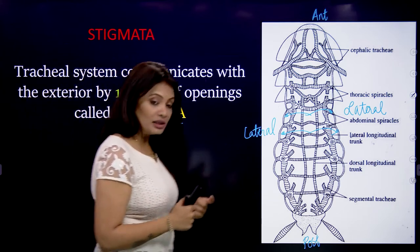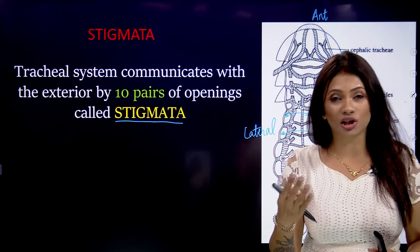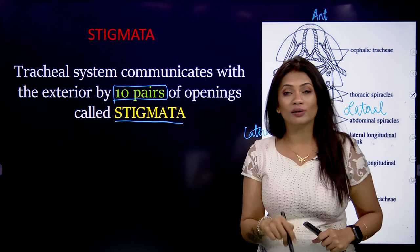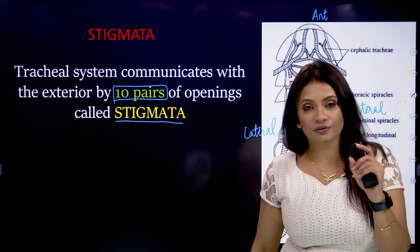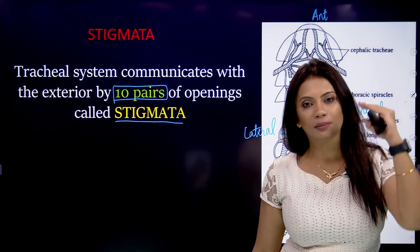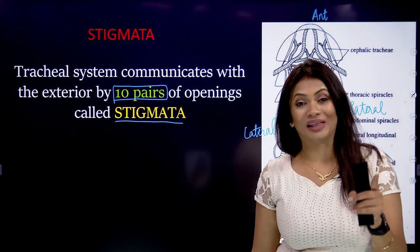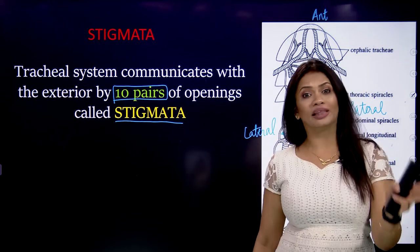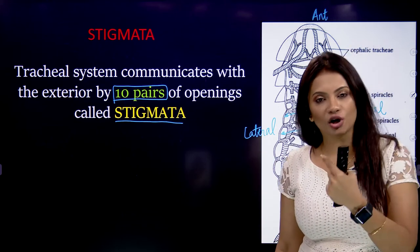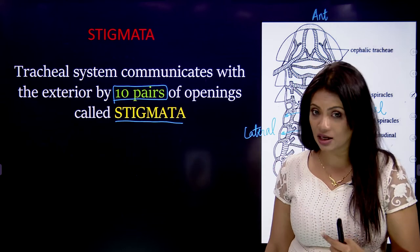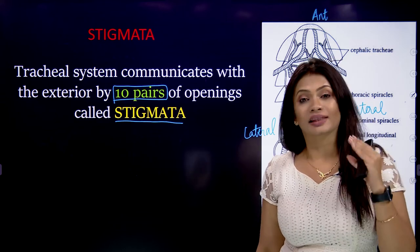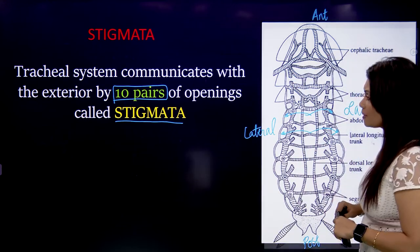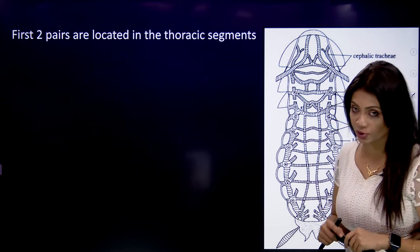The 10 pairs of spiracles are distributed as follows. The first two pairs are located in the thoracic segments — specifically, the first pair is in the mesothorax and the second pair is in the metathorax. That accounts for two pairs in the thorax. The remaining eight pairs are found in the abdomen region. The abdomen has 10 segments, and the first eight segments are the ones which have spiracles.